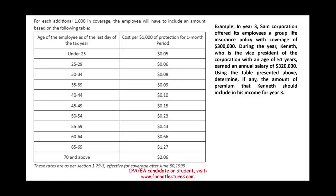The IRS provides a table based on the employee's age as of the last day of the tax year, showing the cost per $1,000 of protection per month. For example, in Year 3, Sam Corporation offered its employees a group life insurance policy with a coverage of $300,000, which exceeds $50,000. Kenneth, a VP aged 51, earned an annual salary of $320,000 — age 51 falls in the 50 to 54 bracket.